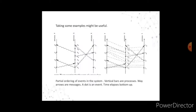Taking some examples might be useful. In the following diagram, as you can see in the figure on the left, P1 → P2 because they are events in the same process. Similarly Q1 and Q2 are ordered due to message sending from process Q to process P. In the diagram, vertical bars are processes, wavy arrows are messages, a dot is an event, and time elapses bottom-up.